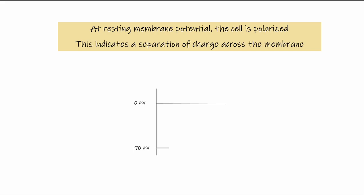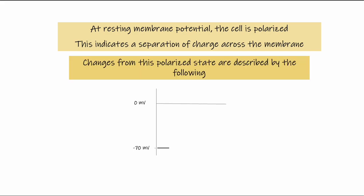At resting membrane potential, which is negative 70 in these typical cells, we say the cell is polarized, indicating a separation of charge across the membrane. Changes from that polarized baseline can be described as follows: anytime the membrane potential is less negative than negative 70, the cell is said to be depolarized. If we make it more negative than negative 70, the cell is hyperpolarized.